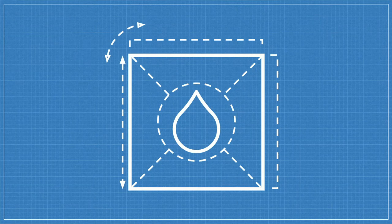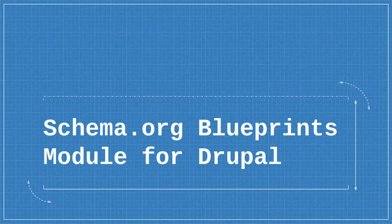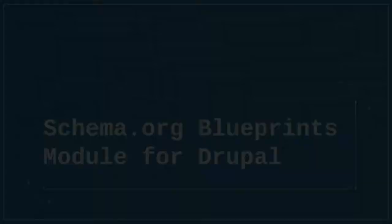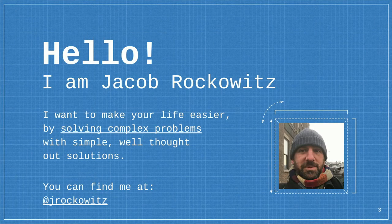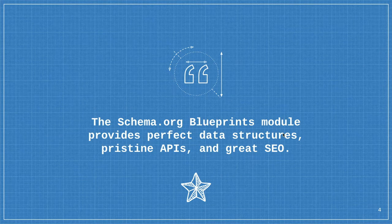This is a small group so I'll let people ask questions while I'm going through. This presentation is about the schema.org blueprints module for Drupal. My name is Jacob Rockowitz — I want to make your life easier by solving complex problems with simple, well-thought-out solutions. The goal of this module: the schema.org blueprints module provides perfect data structure, pristine APIs, and great SEO — all three at once, with ease.